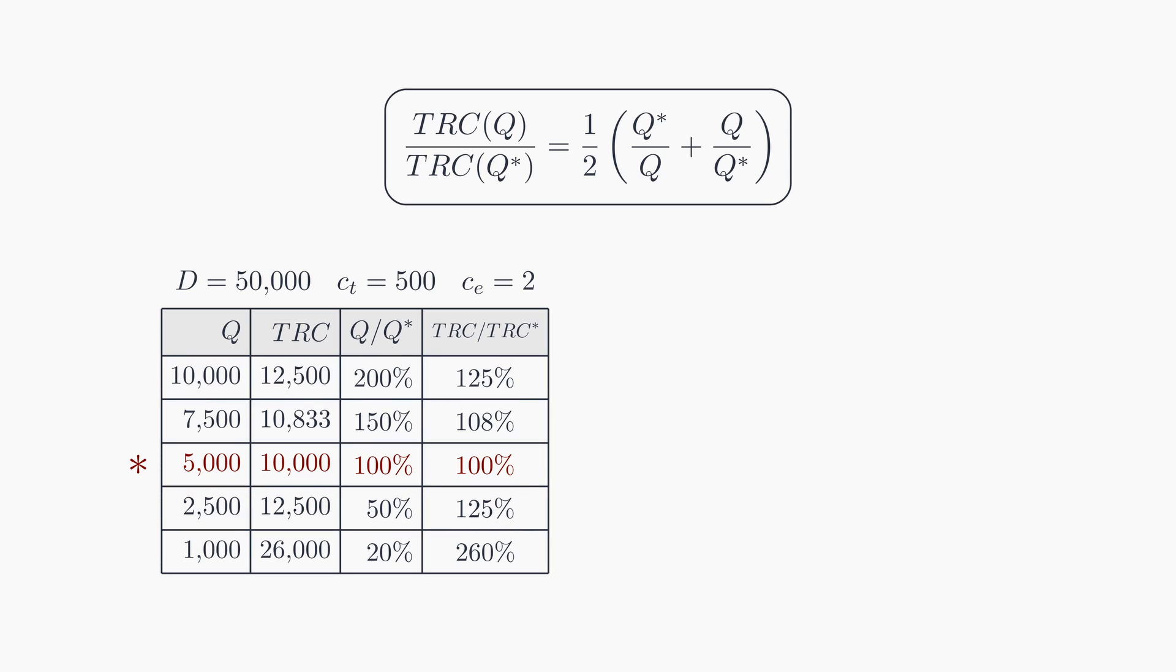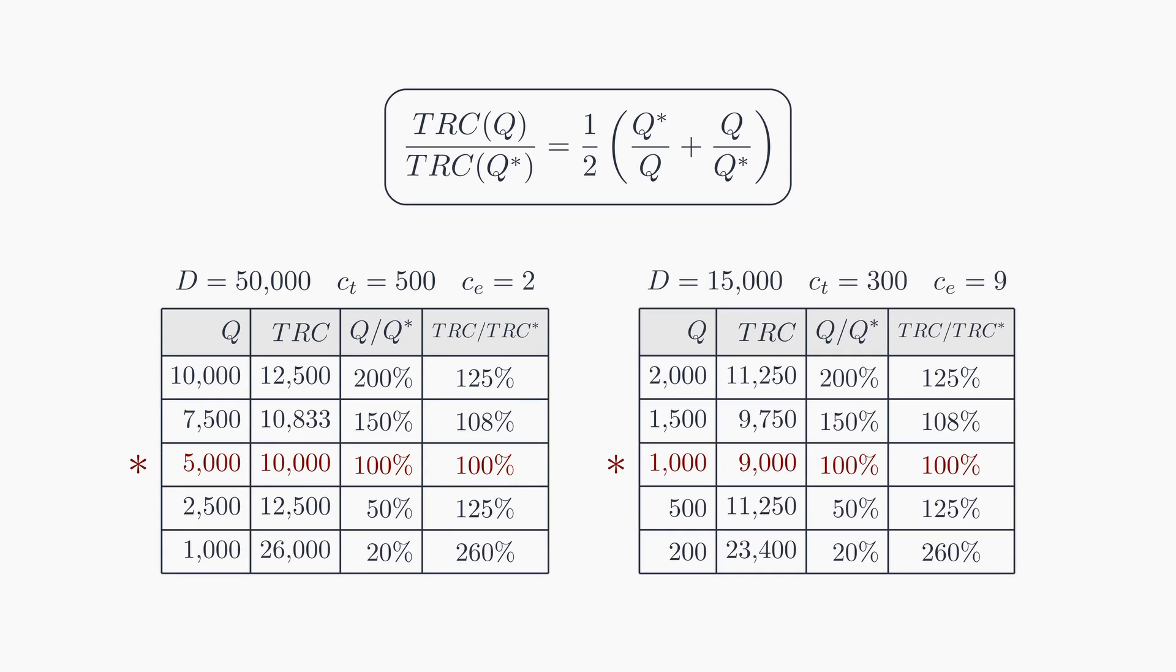Now, take a look at this other table with different parameters. You will notice that the last two columns are identical in both tables. This exemplifies the fact that this cost sensitivity depends exclusively on the degree to which q varies in relation to q star.